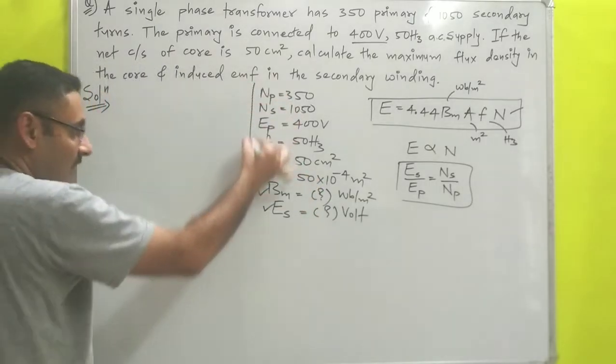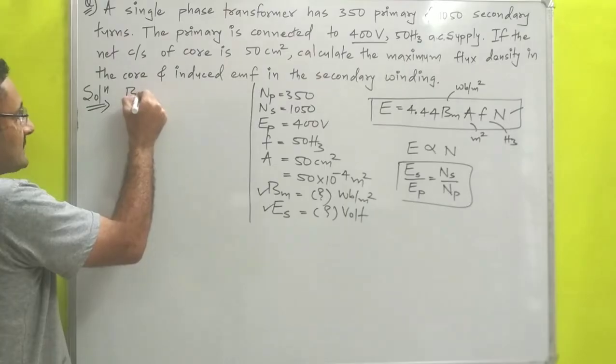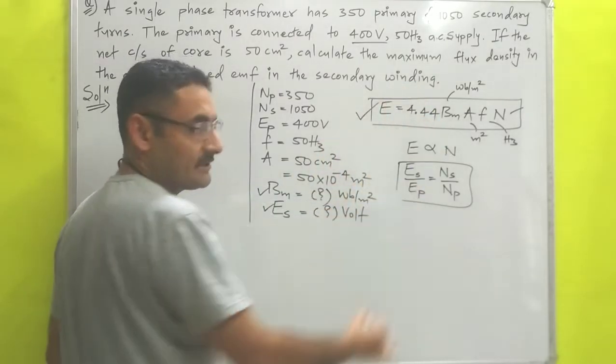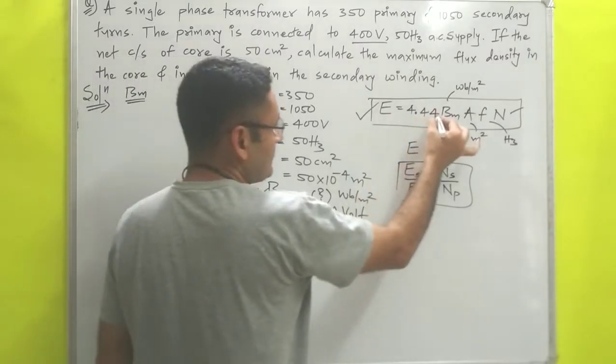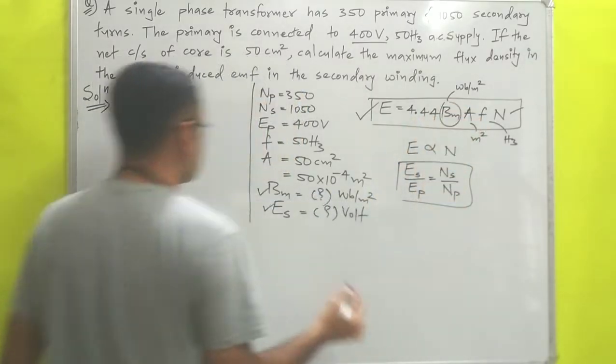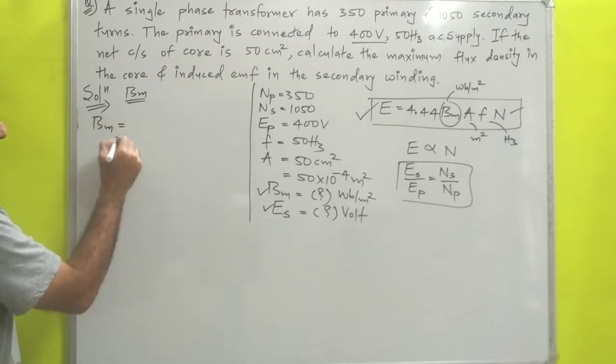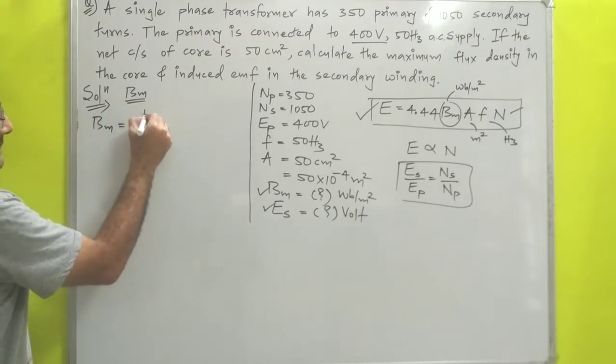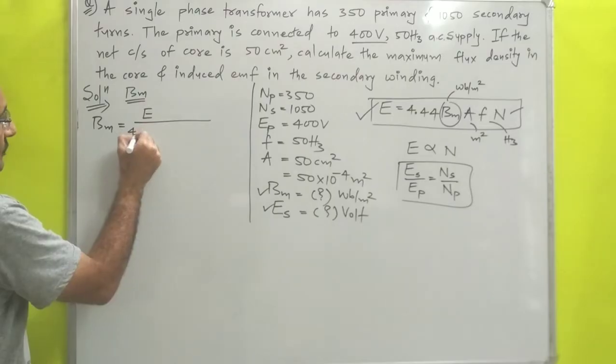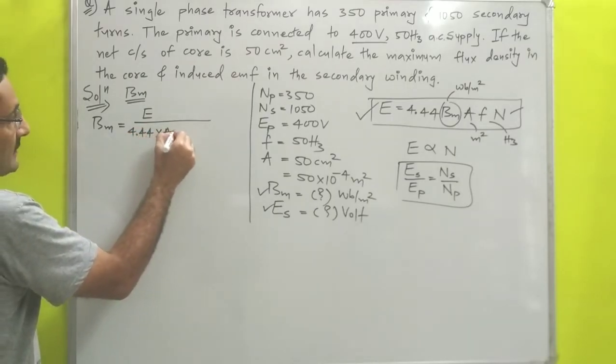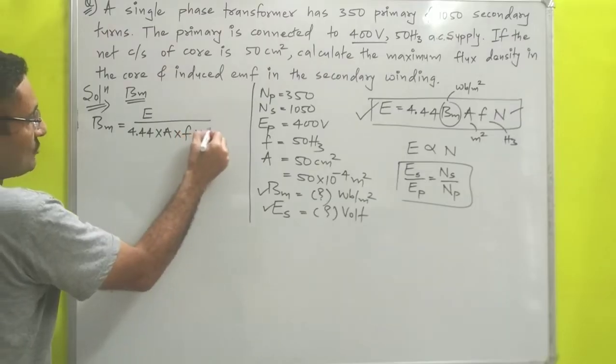First we'll calculate maximum flux density. For that purpose, from the first equation we have derived, I will make Bm as subject. So maximum flux density Bm = E / (4.44 × A × f × N).